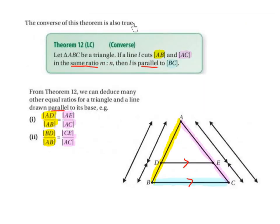The converse, or the opposite of this theorem, is also true. So theorem 12, the converse: let the triangle ABC be a triangle. If a line L cuts AB and AC in the same ratio M to N, then L must be parallel to BC. So this line DE, which we could also call L, must be parallel to BC if it cuts AB and AC in the same ratio.